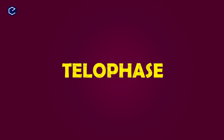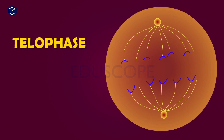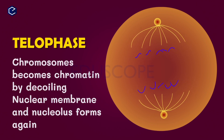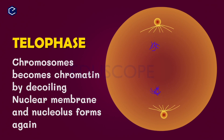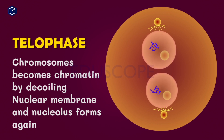The last phase is telophase. In this phase, the chromosomes are separated to each pole. The chromosomes begin decoiling, becoming chromatin once again. The nuclear membrane and nucleolus reform in each half of the cell.